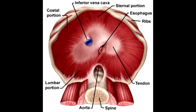What nerve innervates the diaphragm? The diaphragm is innervated by the phrenic nerve, which comes off of C3, C4, and C5.